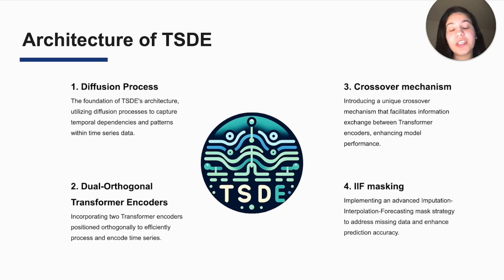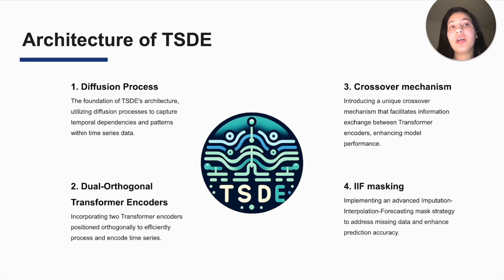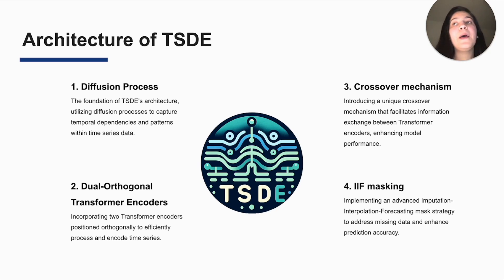Our architecture is composed of four main components. First, a denoising diffusion process which retrieves ground truth values by denoising the corrupted ones and using the embeddings of the observed values as a condition.